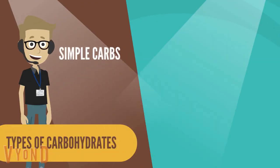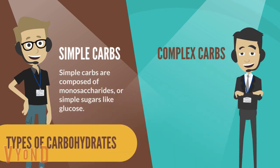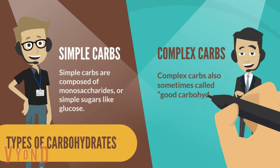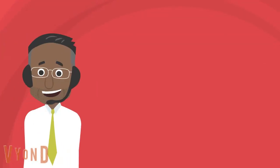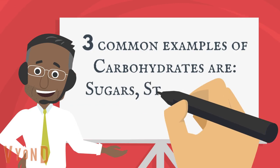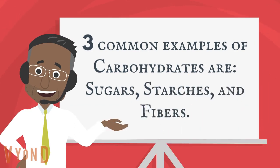Types of carbohydrates: simple and complex. Simple carbs are composed of monosaccharides, or simple sugars like glucose. Complex carbs, also sometimes called good carbohydrates, are made up of long chains of polysaccharides. Three common examples of carbohydrates are sugars, starches, and fibers.